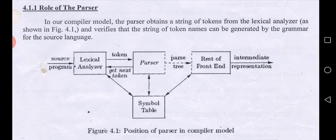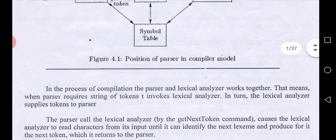Remember from the previous module: whenever there is a request for a token from the parser, only then will the lexical analyzer convert the source program into a token. Because of this, there is bidirectional communication between the lexical analyzer and the parser. The lexical analyzer transfers a token only after receiving a command from the parser saying 'get next token'. Without such a message, the lexical analyzer will not generate a token or read a lexeme. The output of the parser is a parse tree, generated from a root down to leaves, used to identify whether any errors are present.